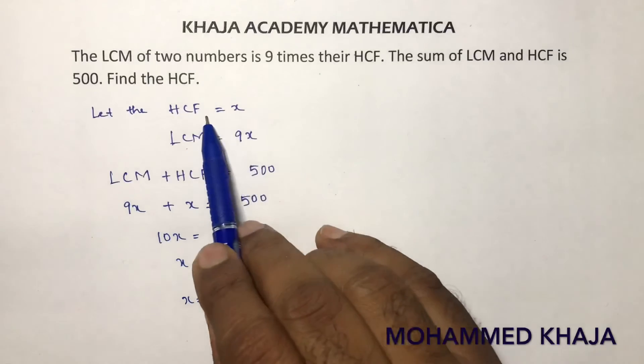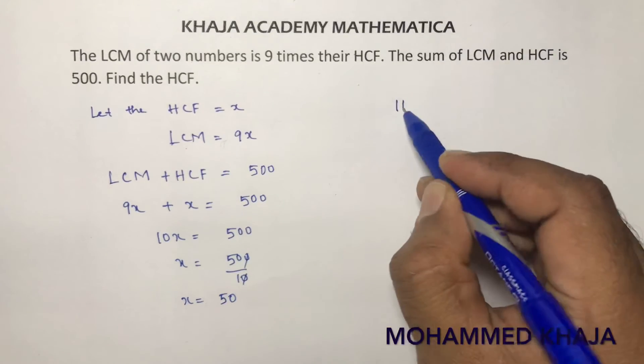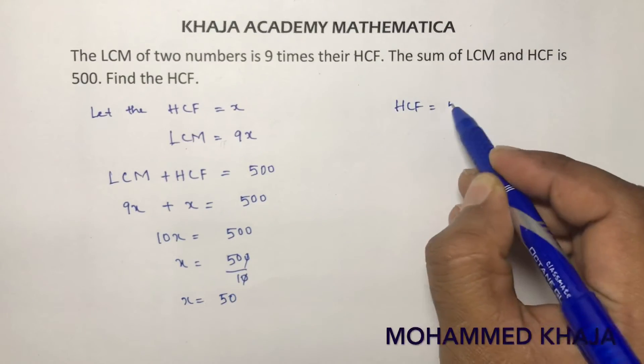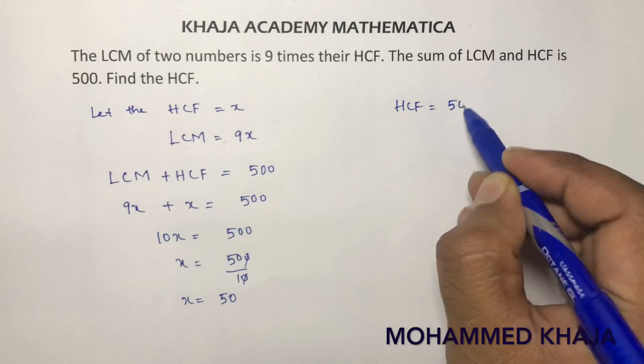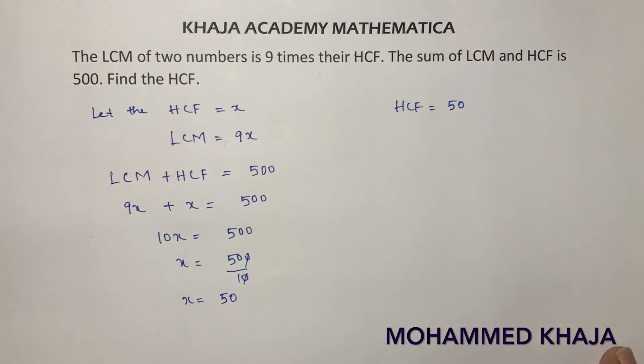Here x is nothing but HCF. So, HCF is 50 because they are asking only HCF.